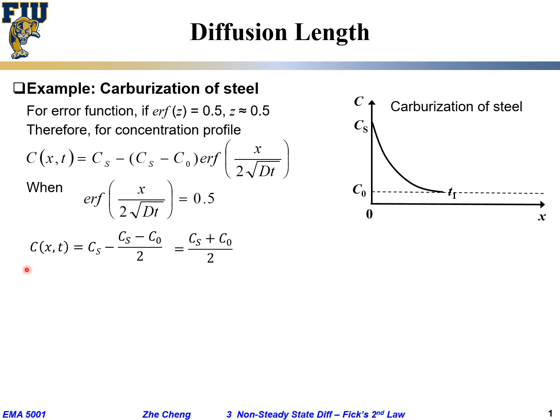So when error function is 0.5, my concentration is half of, or midway between my initial and surface concentration. And when that occurs, what happens to the inside of the error function? When the error function is 0.5, z, which is x over 2 times square root of Dt is roughly 0.5. It means x is roughly square root of Dt.